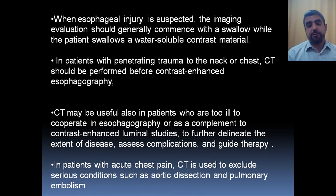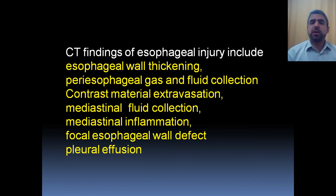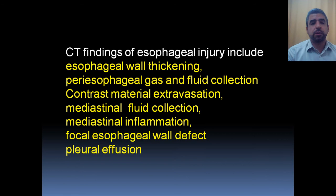The CT findings of esophageal injury include esophageal wall thickening, peri-esophageal gas and fluid collection, contrast material extravasation, mediastinal fluid collection, mediastinal inflammation, focal esophageal wall defect, and pleural effusion. These are the main findings in esophageal injury.